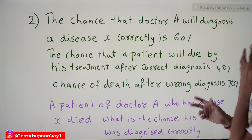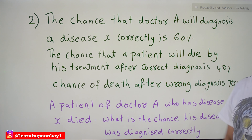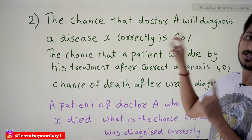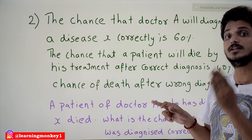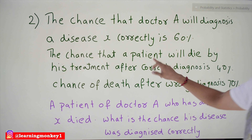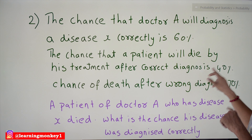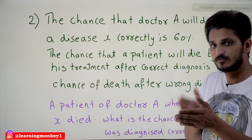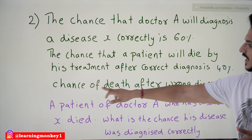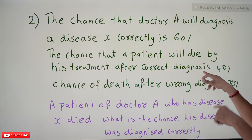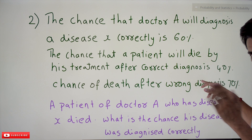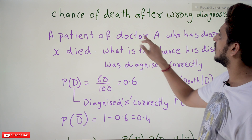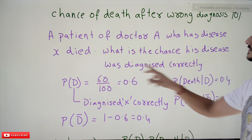The second example: the chance that doctor A will diagnose disease X correctly is 60%. This means 40% of the time he may fail in diagnosis. The chance that a patient will die after correct diagnosis is 40%. The chance of death after wrong diagnosis is 70%. These are conditional probabilities — if he diagnosed properly, what is the death rate, and if not properly diagnosed, what is the death rate. A patient of doctor A who had disease X died. What is the chance his disease was diagnosed correctly?